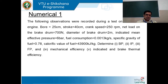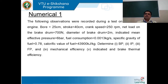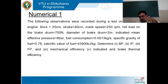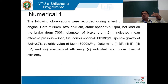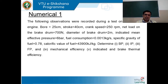Next comes brake specific fuel consumption — the ratio of mass flow rate of fuel to brake power. Mass flow rate of fuel is in kg per hour, brake power in kilowatt, so brake specific fuel consumption has units of kg per kilowatt. Lastly, we have air to fuel ratio — used in advanced-level problems on internal combustion engines. It is the mass flow rate of air (MA) to mass flow rate of fuel (MF).